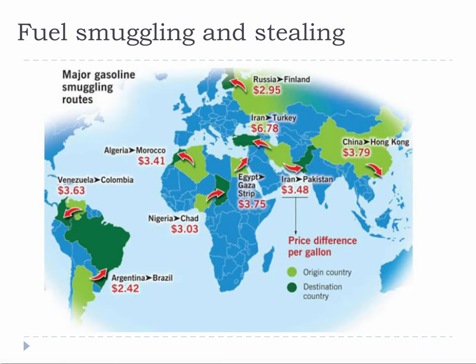Fuel smuggling and stealing is an aspect of fuel economics not often discussed. These kinds of price differences, shown in the image, support gasoline smuggling at the cost of the country with the higher prices. Not all fuel economics is handled in the boardroom or the trading floor or the government. In some cases, the economics are based on smuggling and stealing. In places where fuel is highly valued but not easily available, fuel can be acquired by more than just legal means. Even though we are globalized, national laws are relative to the country, and this absolutely affects supply and demand economics.